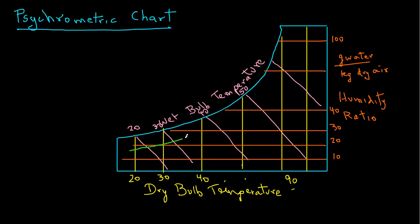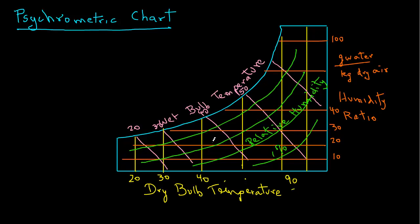Next, we have curves that represent percent relative humidity. And we will label them as relative humidity curves. And the values may range from 1% to 50%. And the left most curve is for 100% relative humidity. And we also call it the saturation curve.